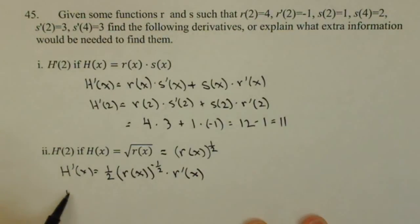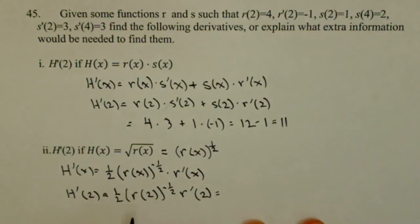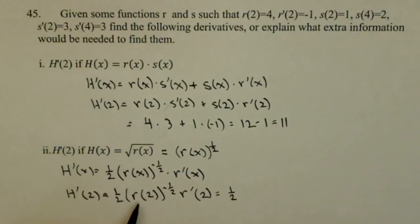Then H prime of two is one half times r of two to the negative one half times r prime of two. So we have values for those, so we have one half, r of two is given right here, it's four, so we have one half, four to the negative one half, times r prime of two, which we used before, it's negative one.